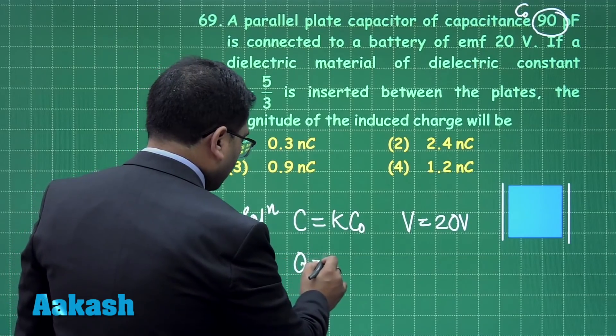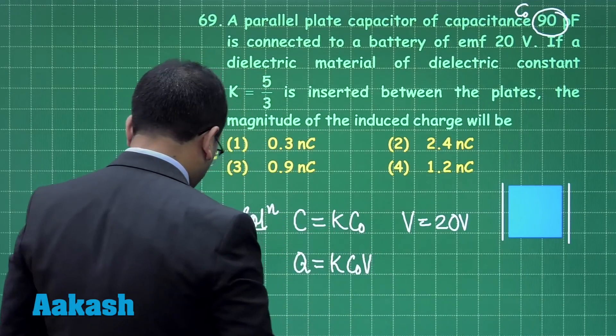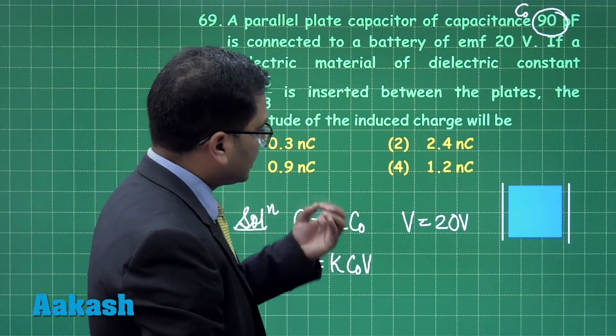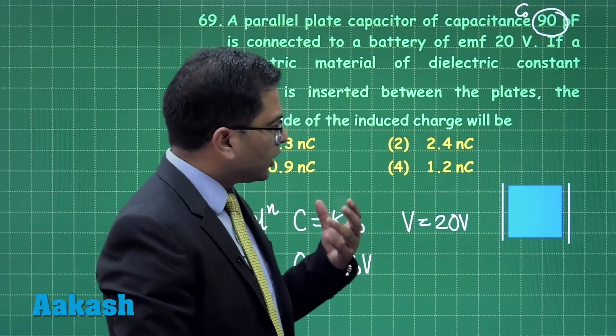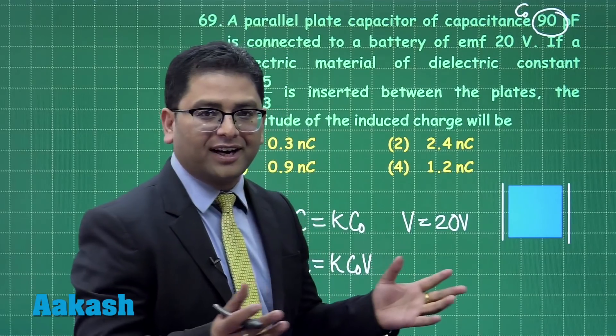Let's calculate Q, that's going to be KC₀ multiplied by V. So that is the charge on the capacitor plate. Now what about the induced charge? That goes with a very straightforward formula.